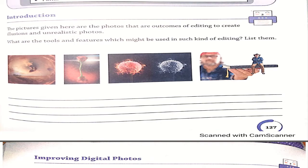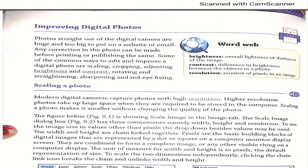How could we improve digital photos? By editing — options include scaling, cropping, adjusting brightness and contrast, rotating, straightening, and sharpening. These features are available on mobile as well as on computer systems when you open any image. Brightness is the overall lightness or darkness of an image; contrast is the difference in brightness between objects in a photo; and resolution is the number of pixels in an image, representing the quality of the picture.